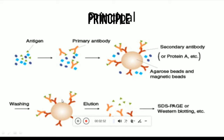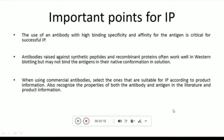After binding, you wash off the excess antigens and unbound antibodies. For elution, most of the time you use 2-mercaptoethanol to elute your protein or antigen of interest away from the primary and secondary antibodies. The eluted protein is then run on SDS-PAGE. This is the basic principle of immunoprecipitation — use the antibody to precipitate the antigen, then separate it on SDS-PAGE.